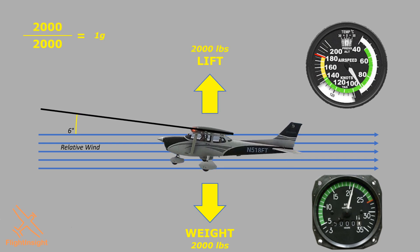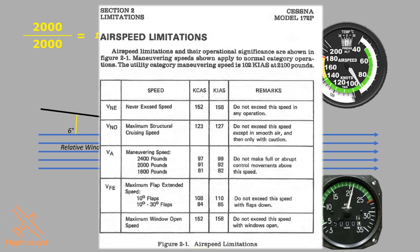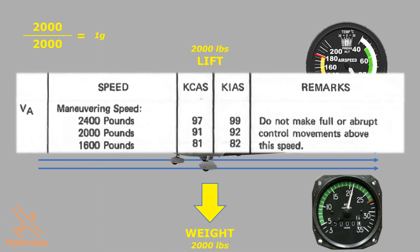By slowing to this speed, we can pull back abruptly or encounter a large gust and not risk structural damage before experiencing a stall. The POH limitations section lists the speed where this is possible — maneuvering speed, VA. At our current weight of 2,000 pounds it's 92 knots, and it's lower at lower weights. The remarks say don't make full abrupt control movements above this speed. Specifically, they've tested the aircraft's ability to withstand loads using a single, full deflection of one control surface — such as pulling the elevator all the way back — not continuous back-and-forth inputs or simultaneous inputs on more than one axis.